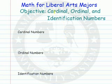In this video, we're going to look at three types of numbers: cardinal numbers, ordinal numbers, and identification numbers.